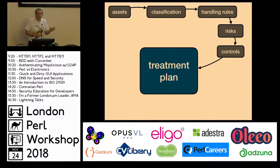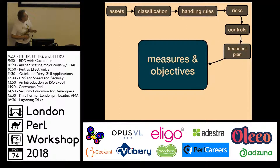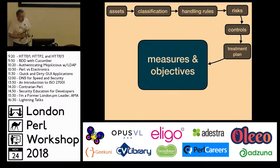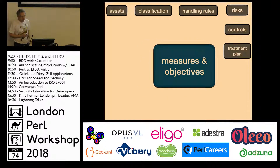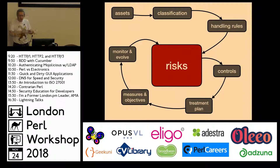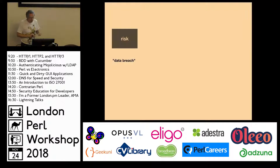Having done that, you then need to think about a treatment plan for how you're going to make sure those risks don't materialize. You then need to define some measures to see if your ISMS is working — is it actually protecting you from those risks? Set some objectives against those measures, monitor this whole process, and evolve. That feedback loop is essentially the core of the ISMS.